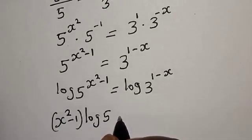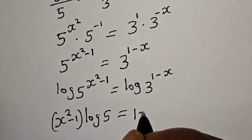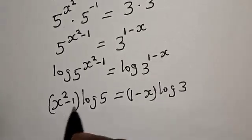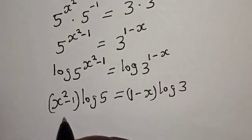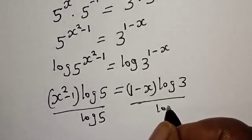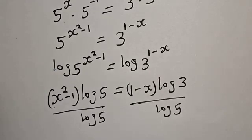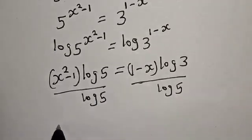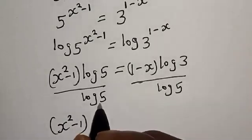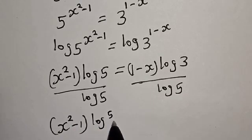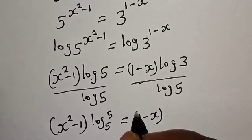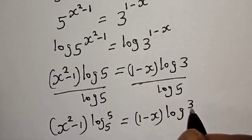Taking logarithms of both sides, s squared minus 1 times log 5 is equal to 1 minus s times log 3. Now let's divide both sides by log 5. Then this can be written as s squared minus 1 times log 5 base 5 is equal to 1 minus s times log 3 base 5.